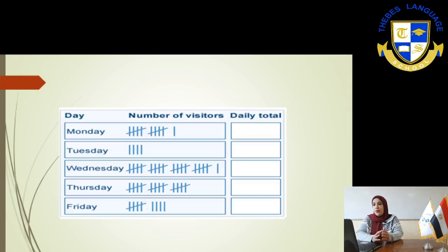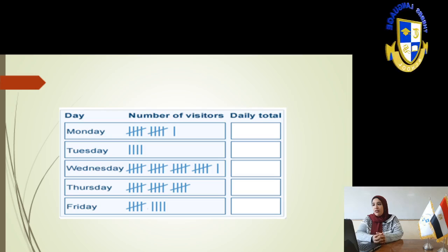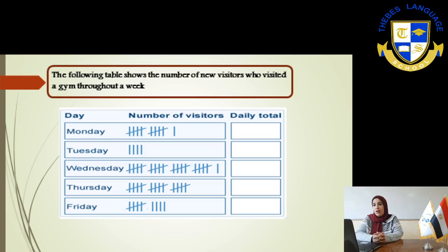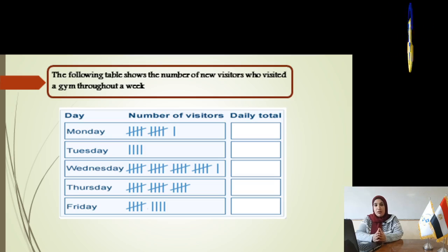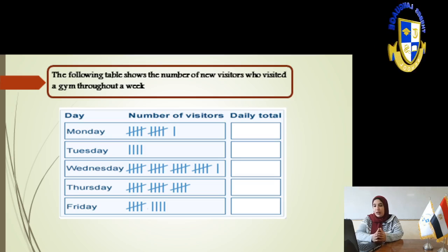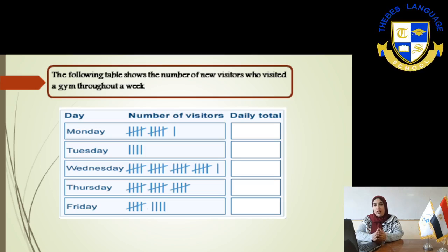Here the following table shows the number of new visitors who visit a gym through a week. On Monday you have number of visitors. How can we calculate this data? We will count the sticks, and as you know before each 5 sticks make a group.